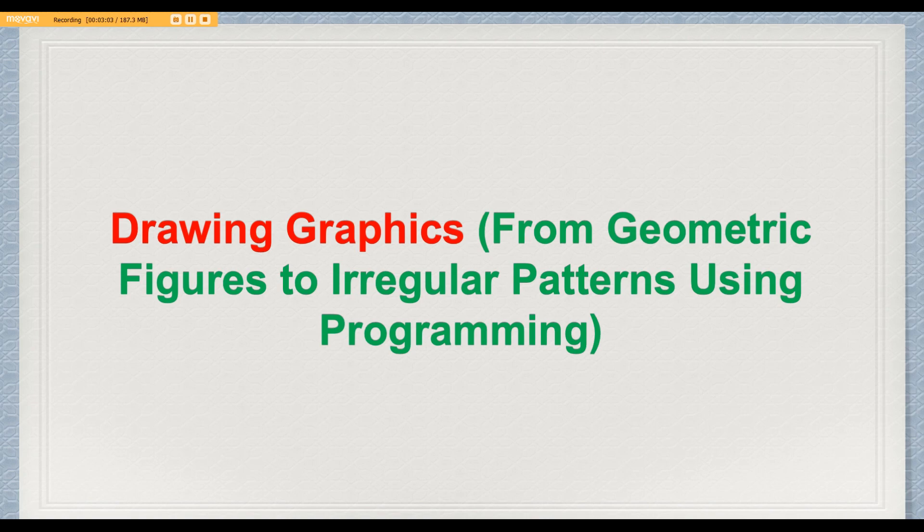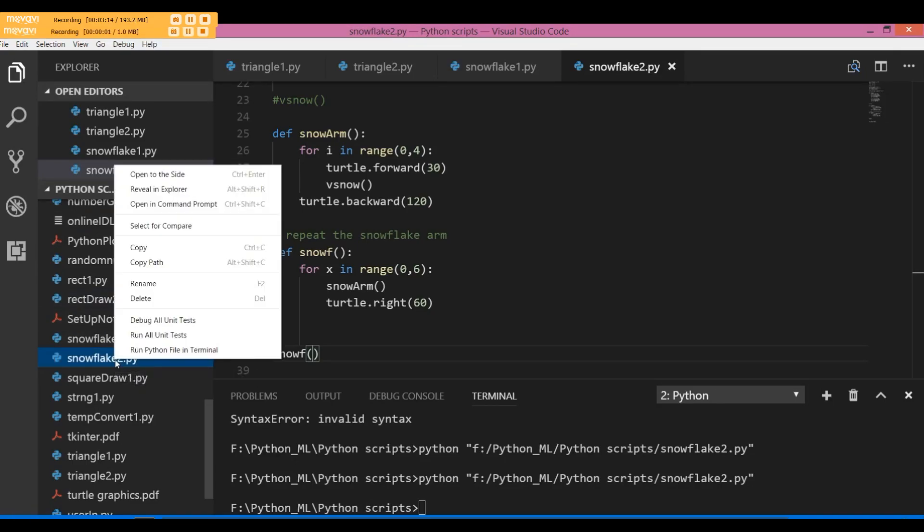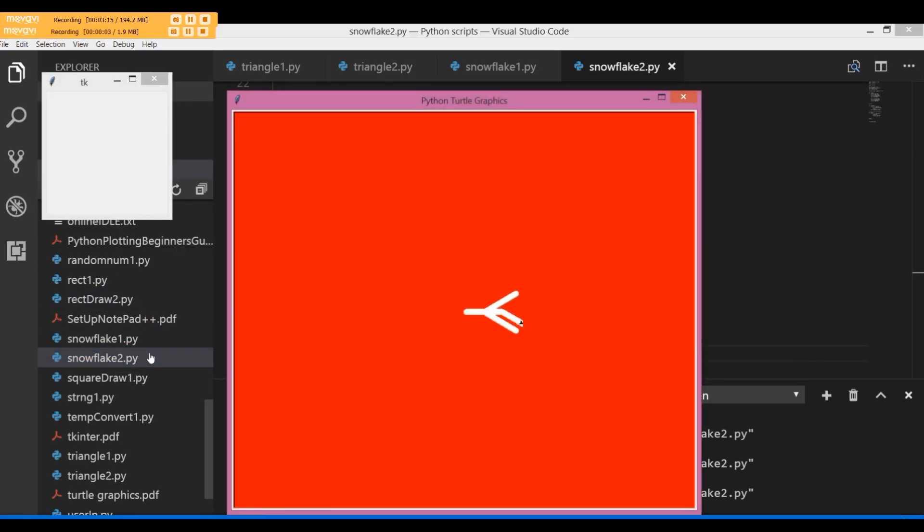We're going to learn to draw graphics, moving from geometric figures to drawing irregular patterns using programming. I'd like you to watch this brief video—these are the kinds of graphics you'll be able to draw once you work through this course.